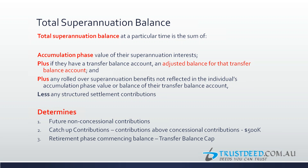TLA 81 also introduces catch-up contributions for those who haven't contributed the full 25,000 concessional contribution cap amount in prior years. If their total superannuation balance is less than 500,000, they can contribute catch-up concessional contributions in future years. However, this extra concessional contribution is only available from 1st of July 2019, and the rules may change between now and then.